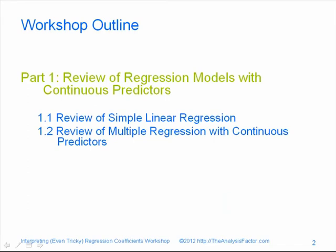In Module 1, we're going to do a review of regression models with continuous predictors. This is probably what your regression class focused on if you've taken one. Even if you have, you'll find it helpful to review these concepts and see how they play out in real data. If you haven't had a specific regression class — for example, if your training focused more on ANOVA — you'll find this especially helpful. So first we're going to do a review of simple linear regression, which is a regression model with a single predictor variable.